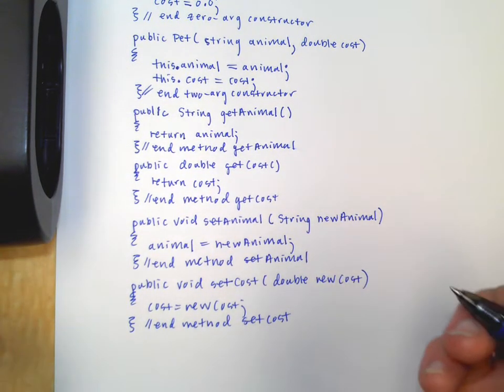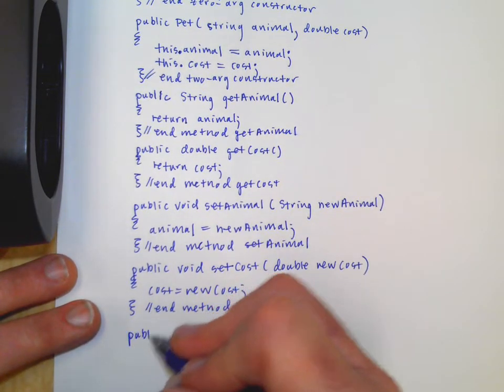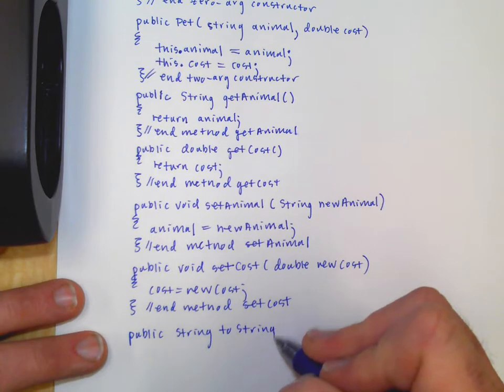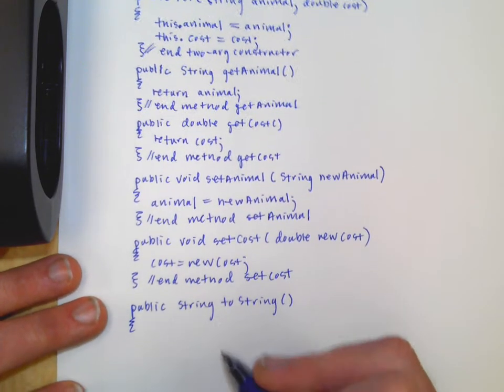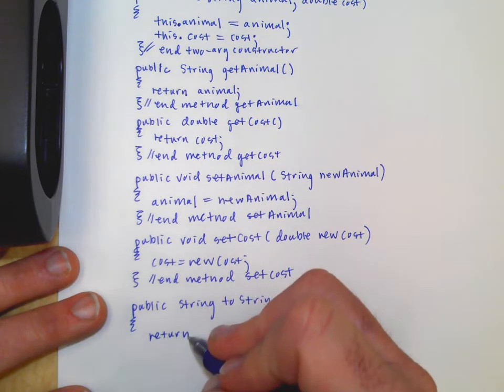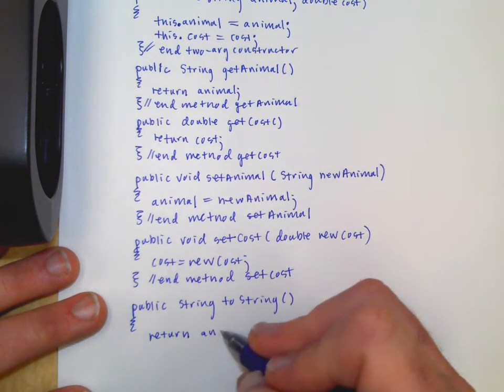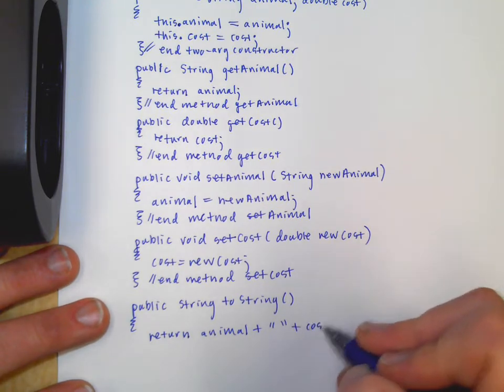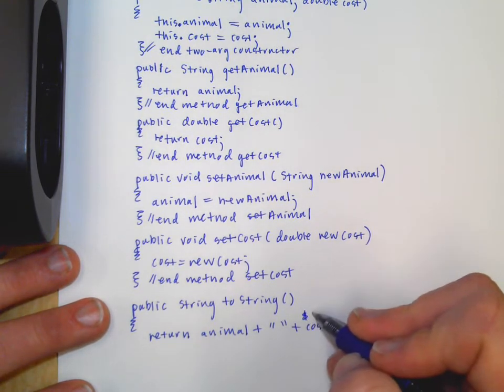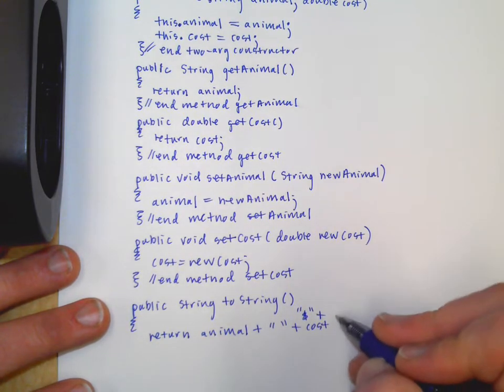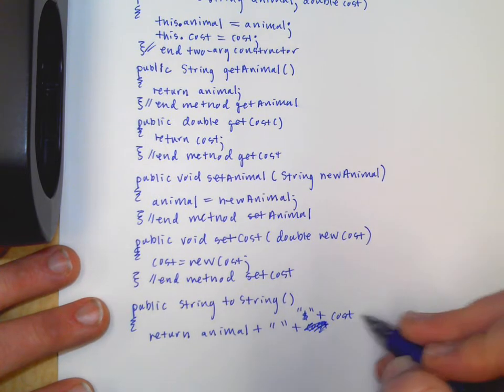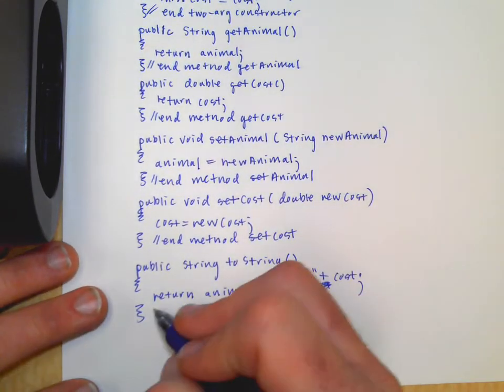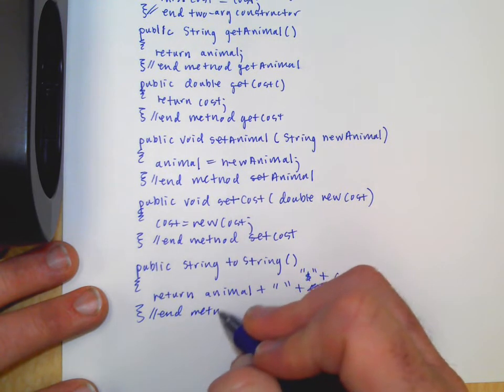We could have a toString, right? I mean, I'm just kind of going through a bunch of the basics here. Public, string, toString. Now these are zero arg. It's kind of like an accessor, but it creates a string. And if it's not that complicated, you just build it and return it at the same time. You say, well, animal. And then we could put like a space in between and put the cost or something. We could put like a dollar sign. That'd be cool. And then the cost. And I kind of made it a little more nice.